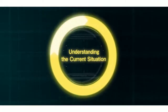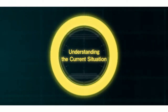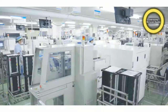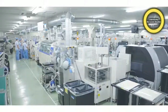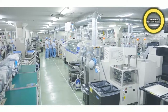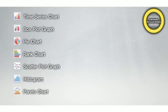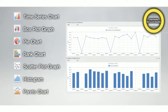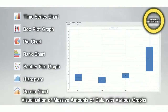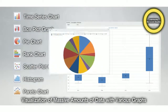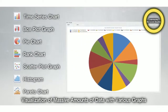The first process is understanding the current situation. In order to understand that a manufacturing line or piece of equipment was using a large amount of energy, it took a lot of time and effort to manually analyze huge amounts of data, selecting and comparing data. However, by utilization of EcoAdvisor, massive amounts of data can be visualized and analyzed easily with various graphs.